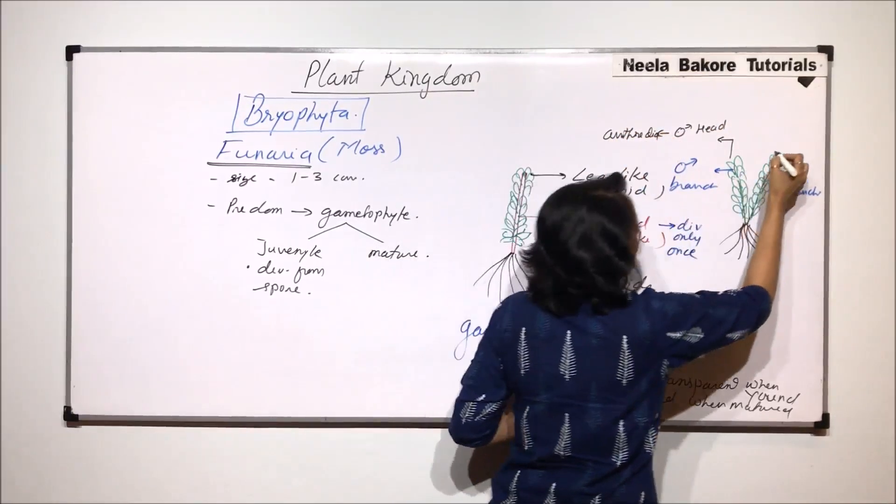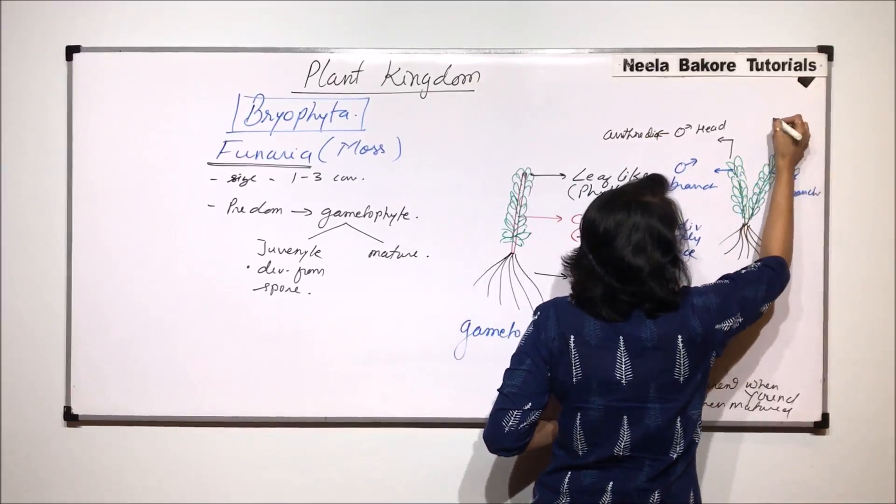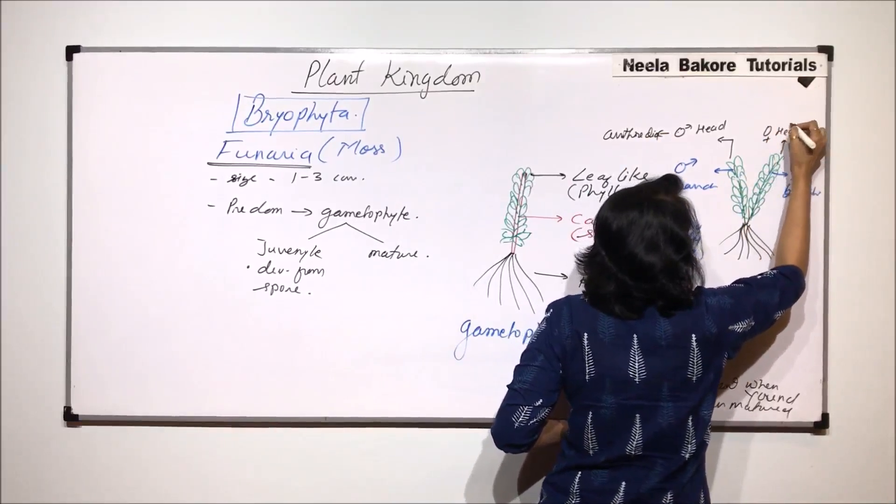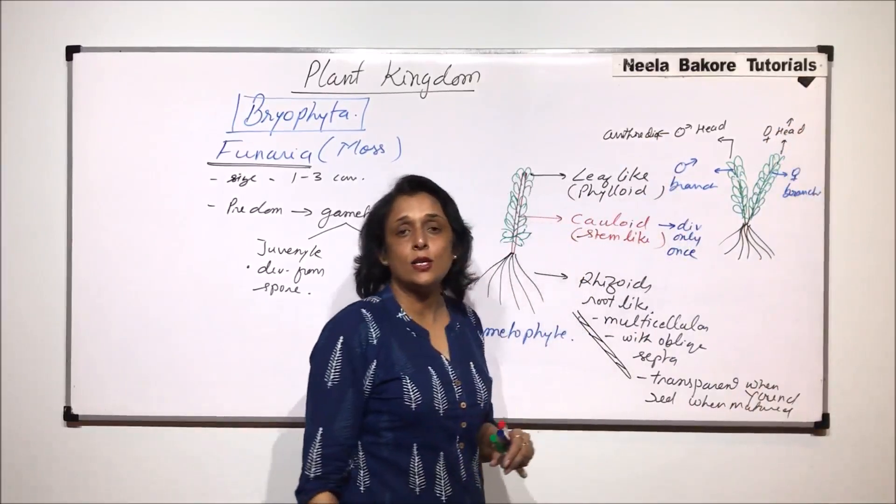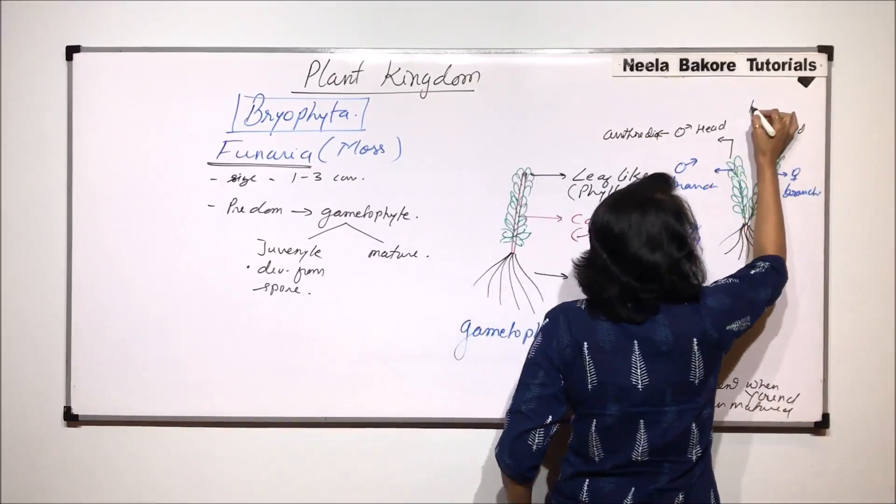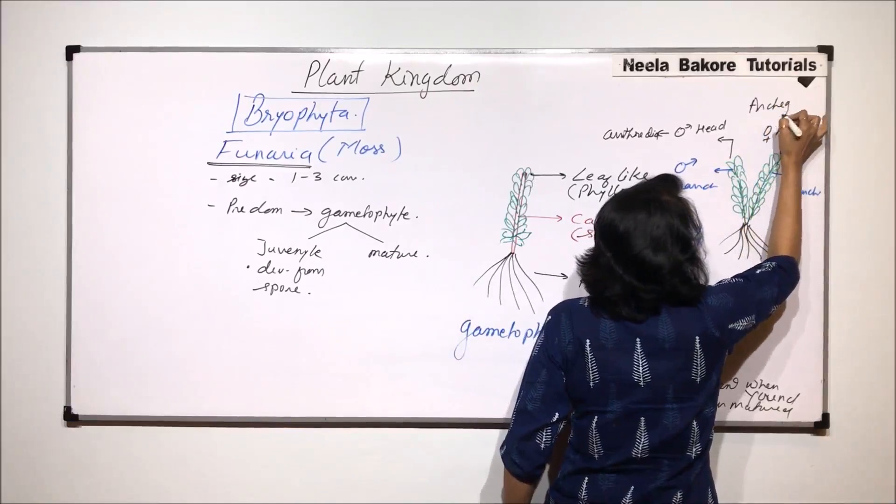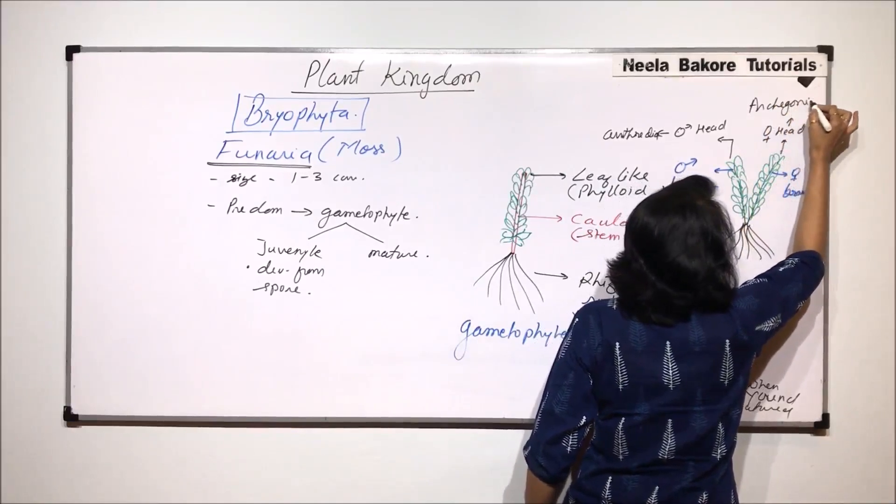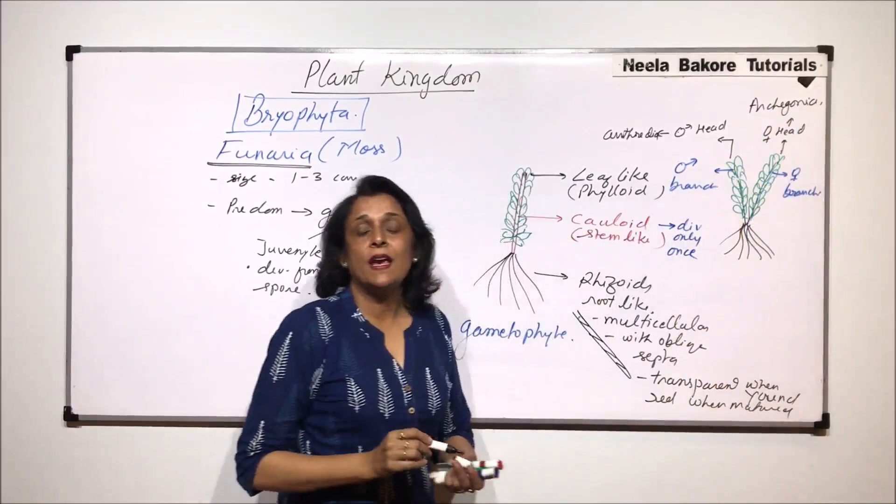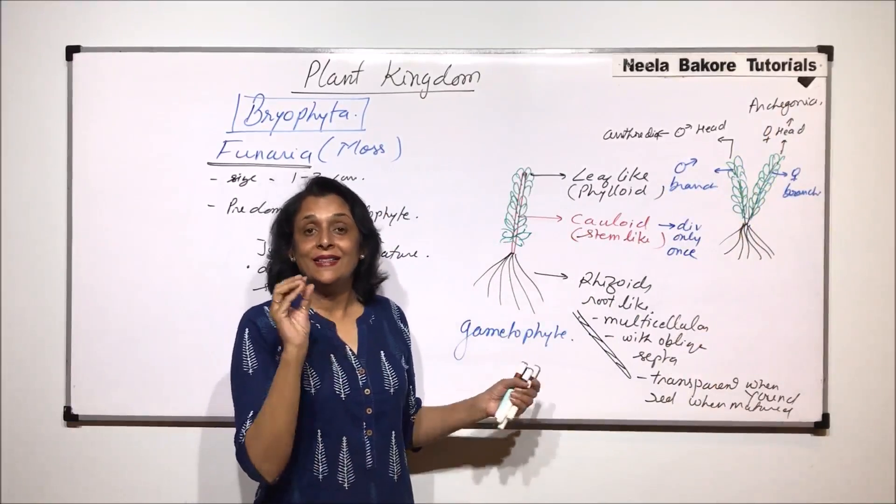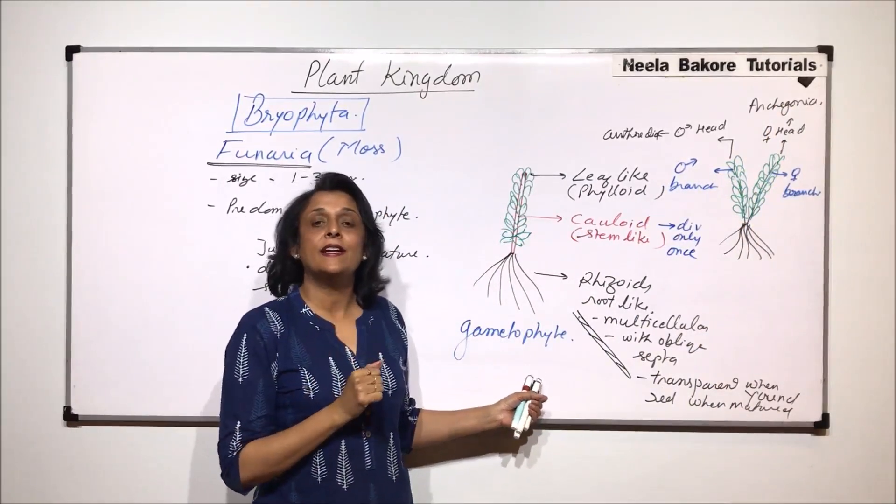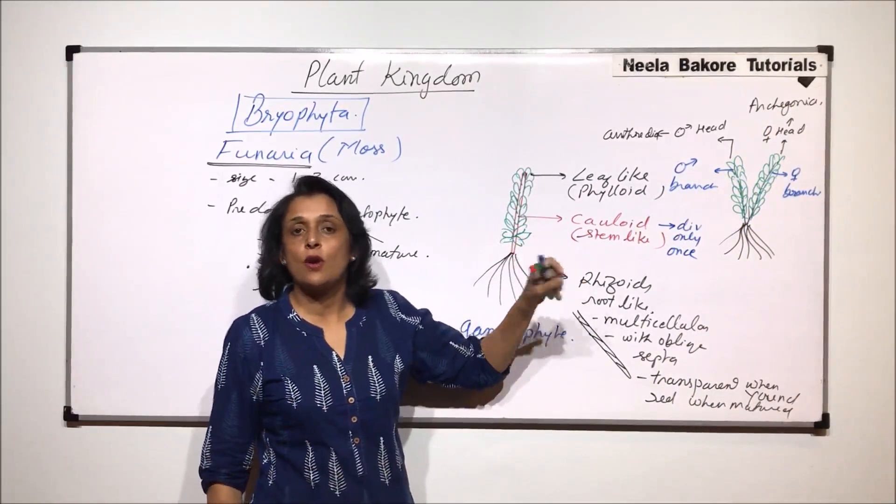Similarly the tip of the female branch is known as the female head and it has the female sex organs which are known as archegonia. So either we find out or look at these sex organs and we can identify whether it is a male branch or a female branch.